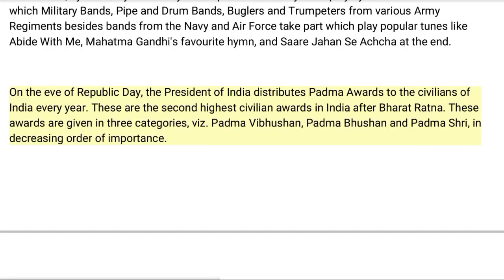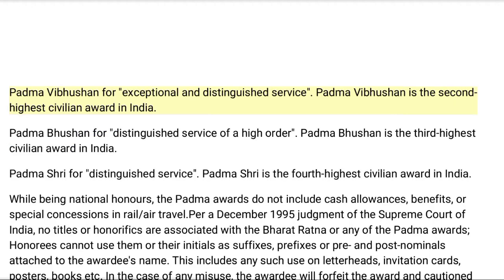On the eve of Republic Day, the president of India distributes Padma Awards to civilians every year. These are the second highest civilian awards in India after Bharat Ratna. These awards are given in three categories: Padma Vibhushan, Padma Bhushan, and Padma Shri, in decreasing order of importance. Padma Vibhushan is awarded for exceptional and distinguished service and is the second highest civilian award in India.